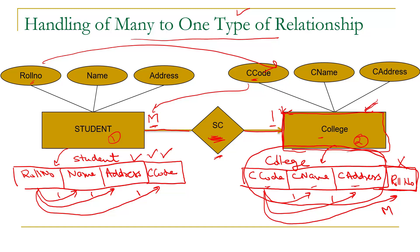In the relational model we always try to have the minimum number of tables. We first try to store relationship information using only the existing tables. In a many-to-many relationship, moving a primary key from one entity set to another introduces a multi-value problem in the target table, so a separate table is required. But for many-to-one relationships, no separate table is needed — the rule is simply: copy the primary key from the 'one' side to the 'many' side.